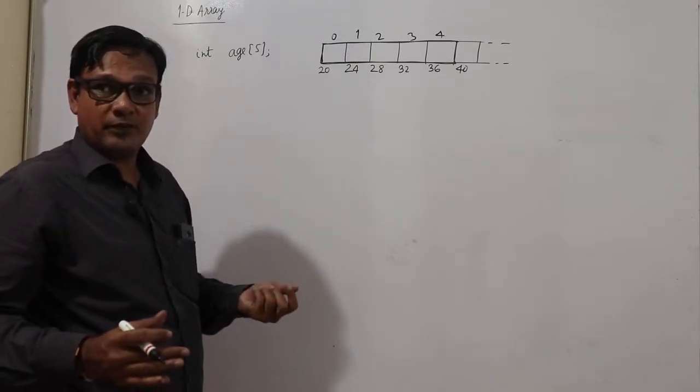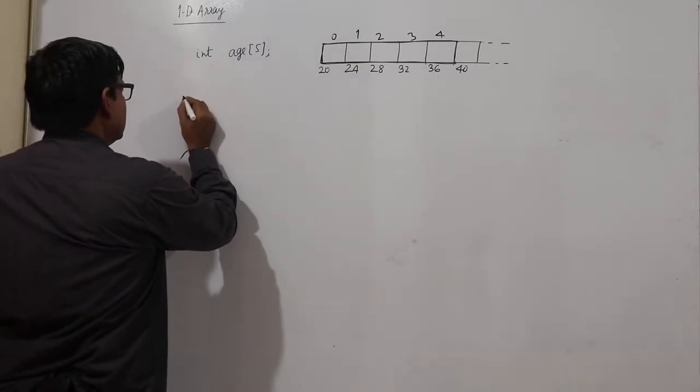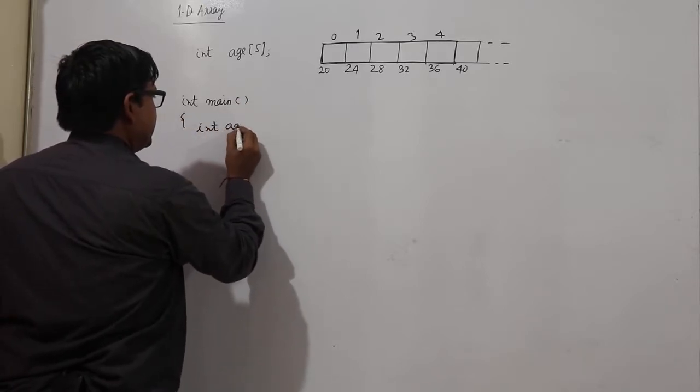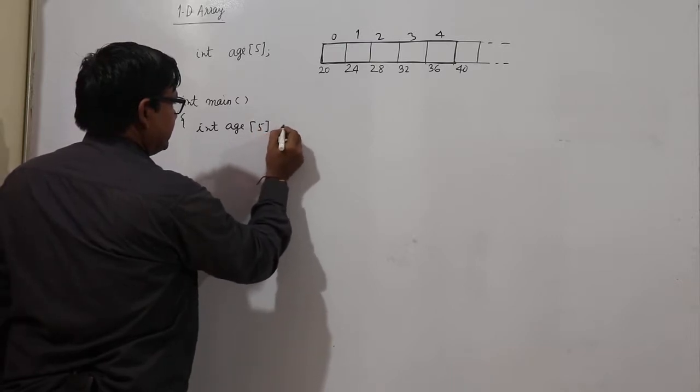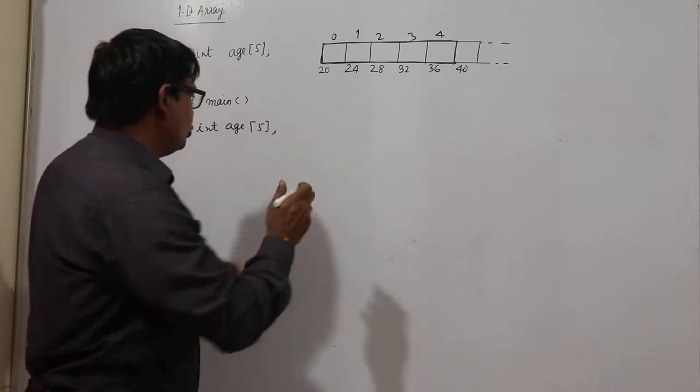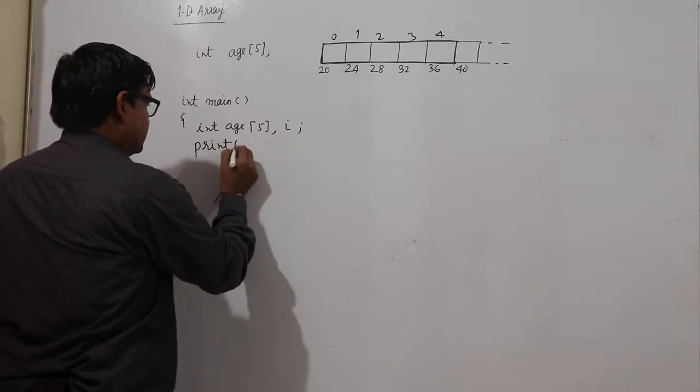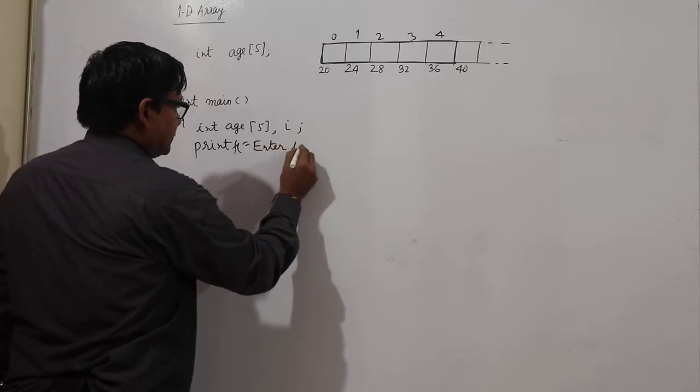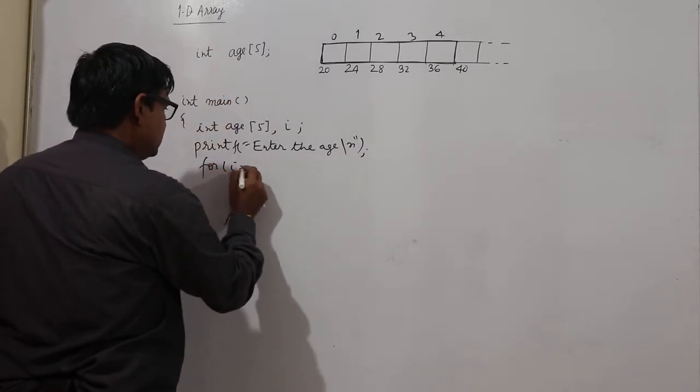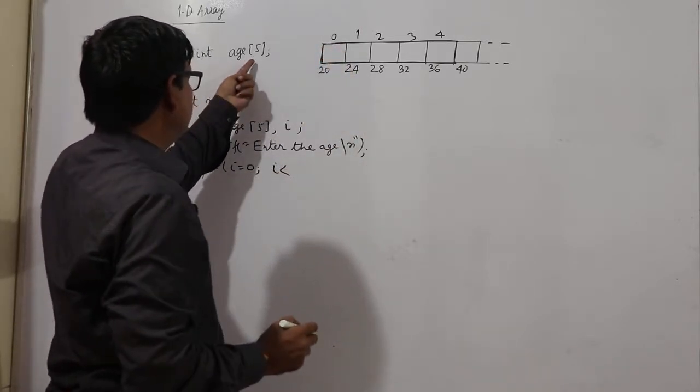If I have to input the age of 5 students, then I will write a program here. Let me write a program here. Int main, int age 5, then one more variable to make the for loop, I will be using i here.